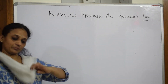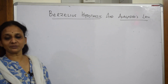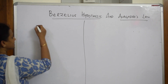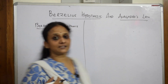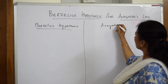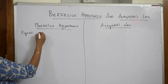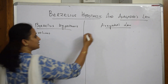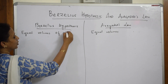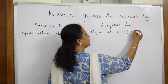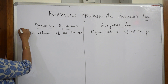Let's learn the next law of chemical combination: Berzelius hypothesis versus Avogadro's law. There are major differences between both. In both cases, the definition starts with equal volumes — equal volumes of all gases under the same conditions of temperature and pressure.